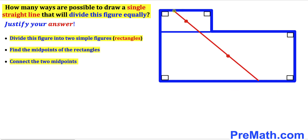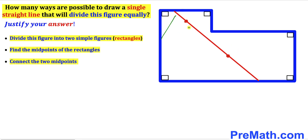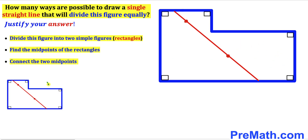Now we connect these two midpoints, and here is our single straight line connecting them. This line divides the given shape into two equal parts — this part is equal to the other part. So we have found our first option.